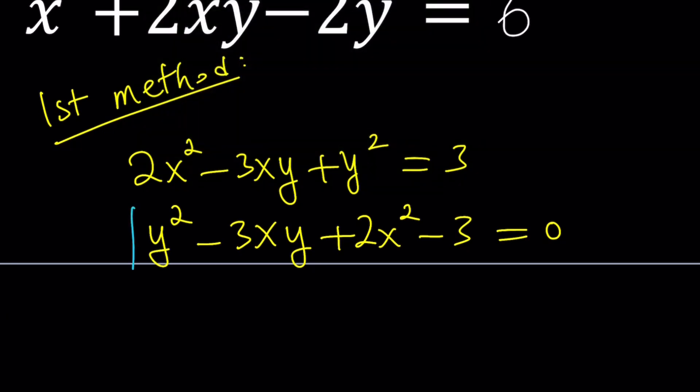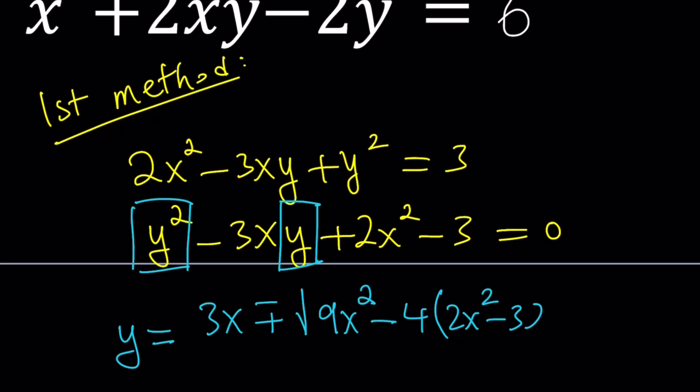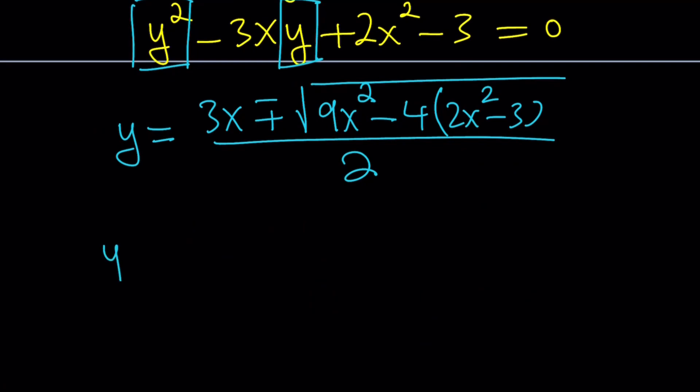So you can go ahead and see that y² is here and y is here. Awesome. Let's go ahead and write the quadratic formula. y = -b ± √(b² - 4ac) that's going to be 4 times 2x² - 3 and then we're going to divide it by 2. Let's go ahead and simplify this and see if we can get a nice expression for y.